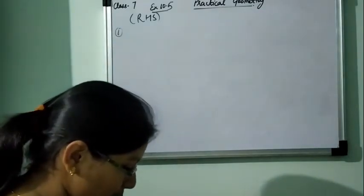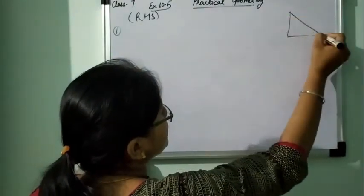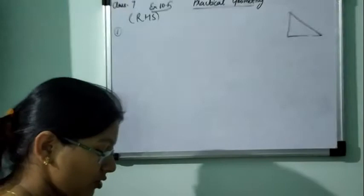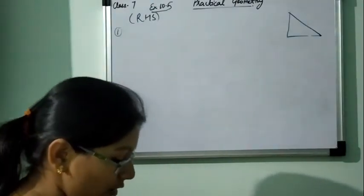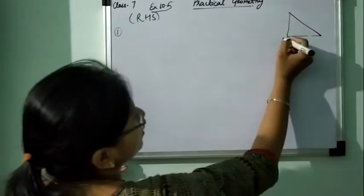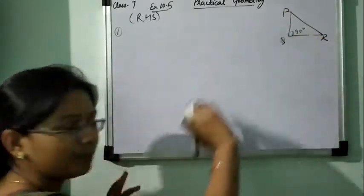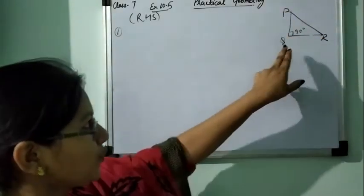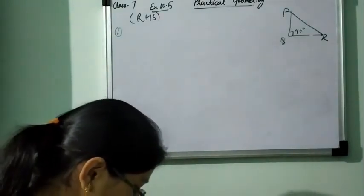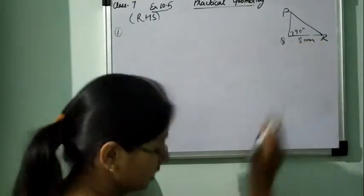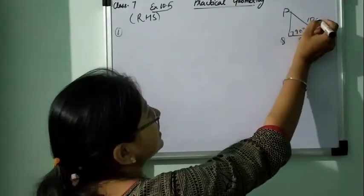The very first question, construct right angle triangle PQR. Because it is very important to know the point where the right angle is. I have made a rough diagram PQR where measure of angle Q is 90 degree. QR is equal to 8 cm and PR is 10 cm. This is 10 cm.